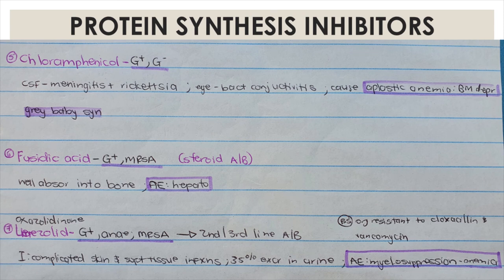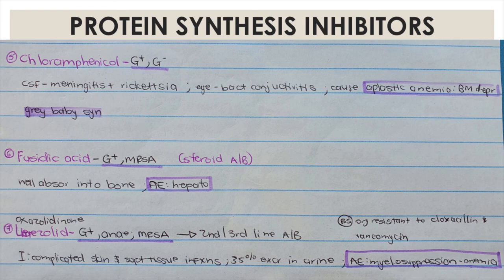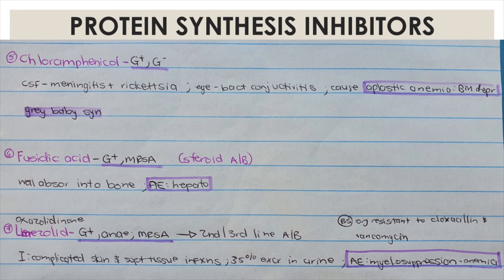Fusidic acid covers gram positive and MRSA. It is a steroid antibiotic, well absorbed into bone, but is hepatotoxic. Linezolid covers gram positive, resistant organisms, and MRSA — it is a second/third-line broad-spectrum antibiotic used in organisms resistant to cloxacillin and vancomycin. It is indicated for complicated skin and soft tissue infections. 35% is excreted in the urine so caution is needed in patients with kidney failure. Adverse effects include myelosuppression and anaemia, as it can affect the bone marrow.